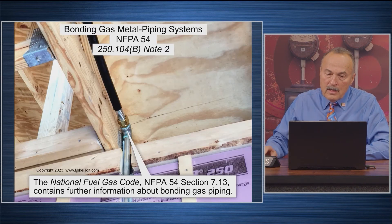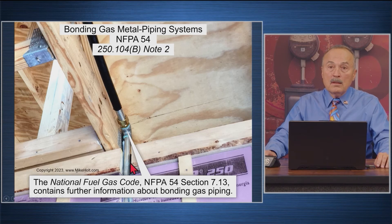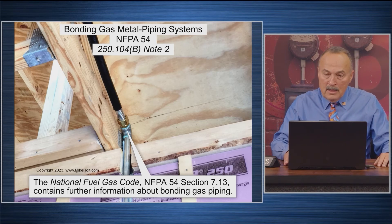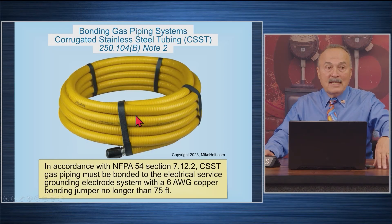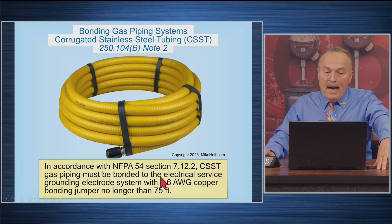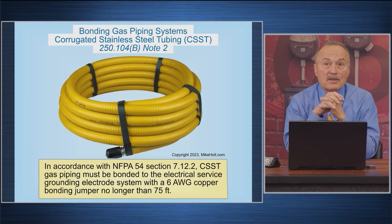To summarize: 7.12.1 (hard pipe) — don't have to worry about bonding. 7.12.2 (standard CSST) — requires bonding with a 6-gauge wire to the service grounding electrode system. 7.12.3 (arc-resistant jacket CSST) — doesn't require bonding. When you have to bond the yellow CSST, you use a 6-gauge wire and bond it to the service grounding electrode system, which is underground — the water pipe, service disconnect enclosure, grounded neutral conductor, grounding electrode conductor, or any available grounding electrode.